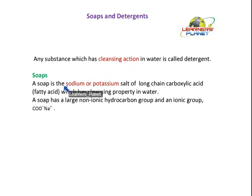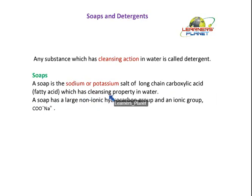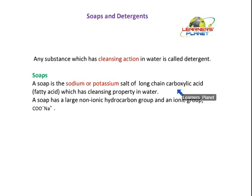So any substance which has cleansing action in water is called a detergent. Now what is a soap? A soap is the sodium or potassium salt of a long-chain carboxylic acid — that is, a fatty acid — which has a cleansing property in water. It is the sodium salt of a long-chain carboxylic acid, which has a carbon chain to which a COOH group is attached.